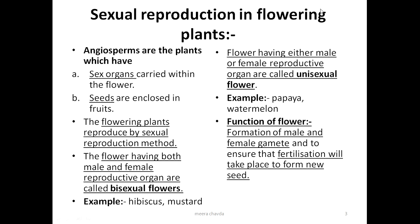Sexual reproduction in flowering plants. Flowering plants are also called angiosperms because of two characteristics: first, they have sex organs carried within the flower, and second, the seeds formed are enclosed inside the fruit. Because of these two characteristics, they are grouped under angiosperms, and flowering plants reproduce by the sexual method.